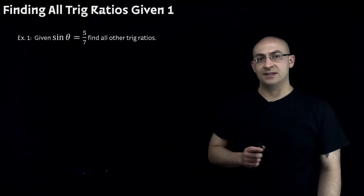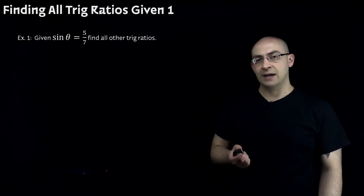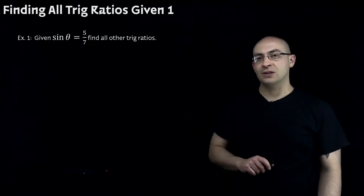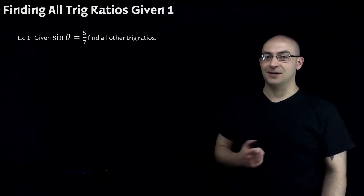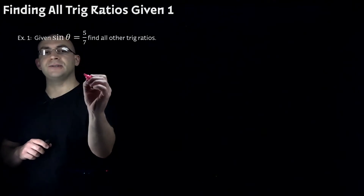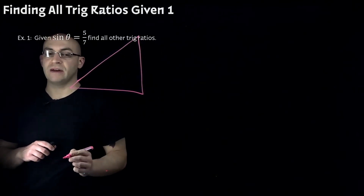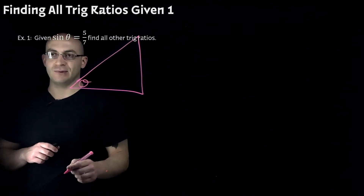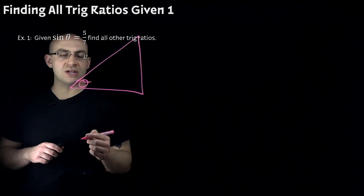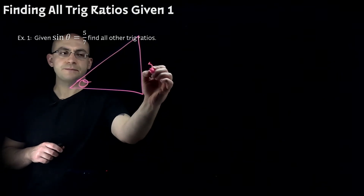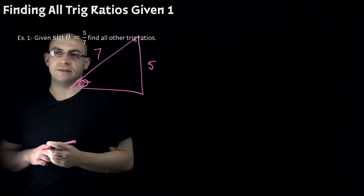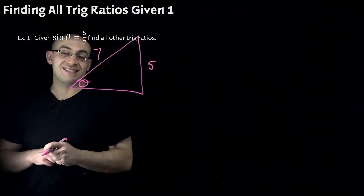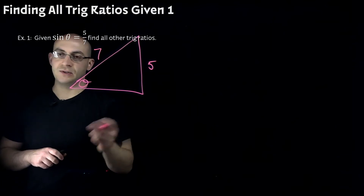Example one: given sine of theta is five over seven, find all of the other trig ratios — so we have to find five more. We can do this off of memory, or we can draw a picture. I particularly like to draw pictures; it makes it a little bit easier to solve. So I'm going to draw my right triangle with theta at this location. Sine of theta is opposite over hypotenuse, so I'm going to label the opposite side as five and the hypotenuse as seven. Now to find all six ratios, we're going to need to find the missing side using the Pythagorean theorem.